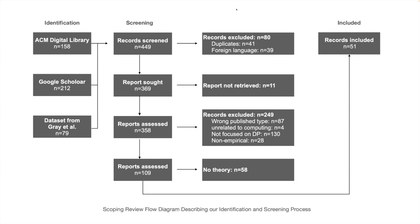In this Scoping Review, we assessed the academic work so far and identified the state of theory in dark pattern research. We downloaded 449 papers and finally included 51 papers for content analysis.